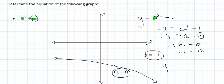And so the final equation of this graph is Y equals negative 2^x minus 1.